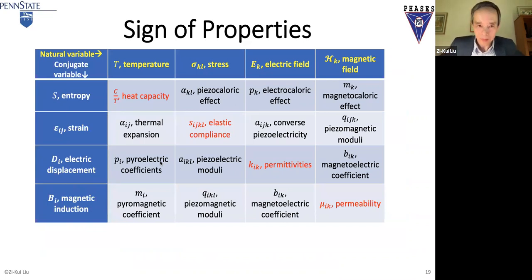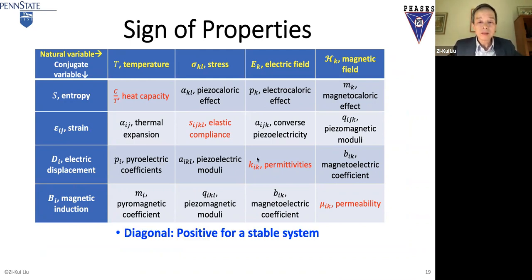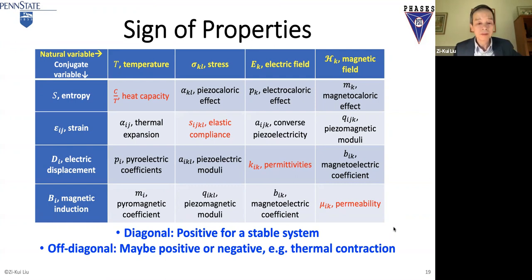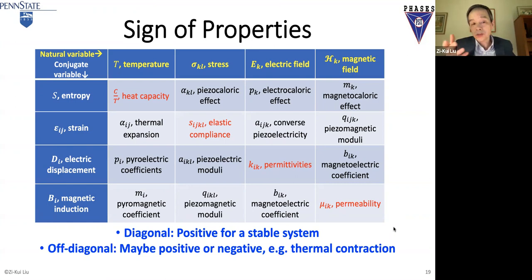It's an interesting question to look at the sign of these properties. The diagonal properties are positive when the system is stable — that's the stability requirement. For the off-diagonal terms, we have no laws to govern their sign, so they could be positive, negative, or zero. JC showed the example of negative or zero thermal expansion in the iron ecosystem. At the critical point — the limit of stability — all the properties become infinite, and because some could be positive or negative, you get positive or negative infinity.